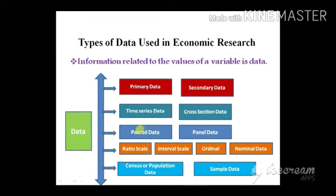If we pool time series and cross-section data together, it becomes pooled data. Panel data is a special type of pooled data where the same individuals, households, industries, or states are observed over several periods of time — the values of the variable are recorded across different time periods. Ratio scale data allows us to use any kind of algebraic operations.